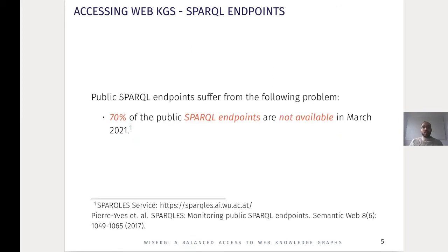However, there are still serious barriers to using public SPARQL endpoints to query knowledge graphs published on the web. This is because SPARQL endpoints are expensive to host and hard to maintain when large datasets are served or concurrent executions of complex queries are allowed to multiple clients. As an example, a service that monitors 565 SPARQL endpoints shows that 70% of the SPARQL endpoints are not available as of March 2021.